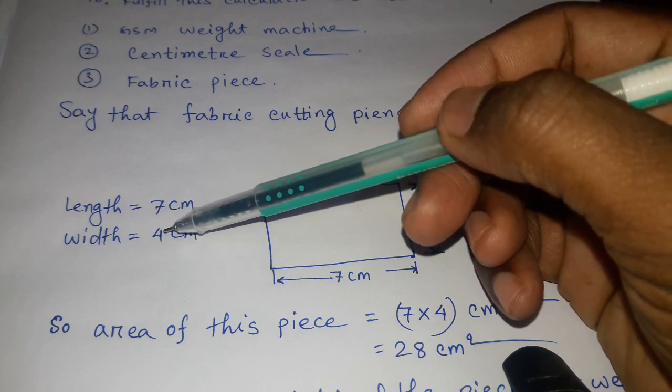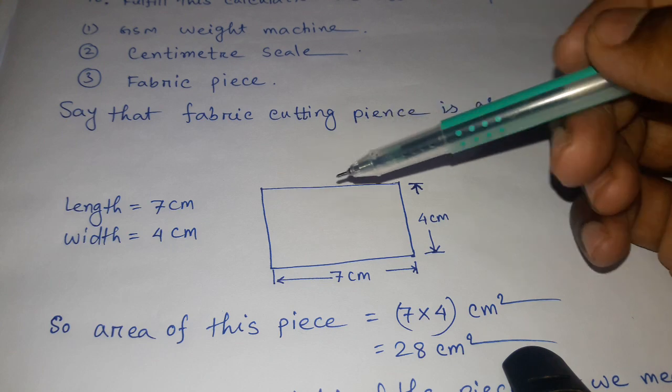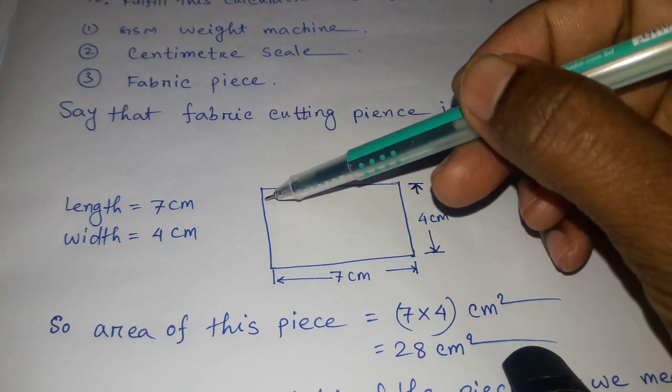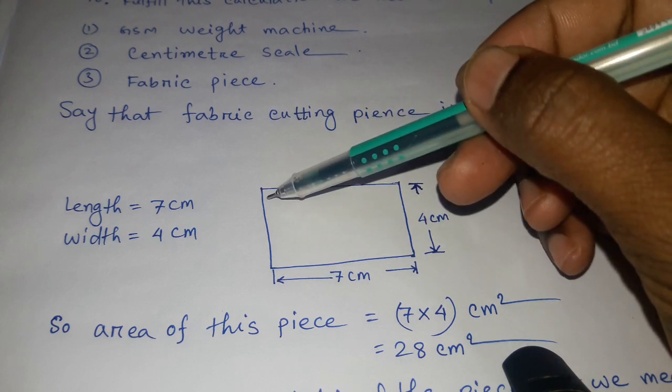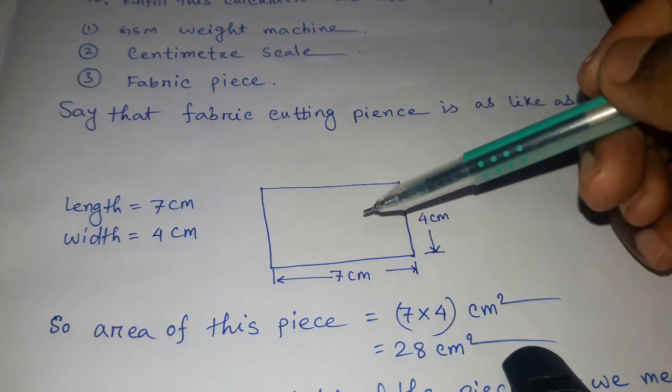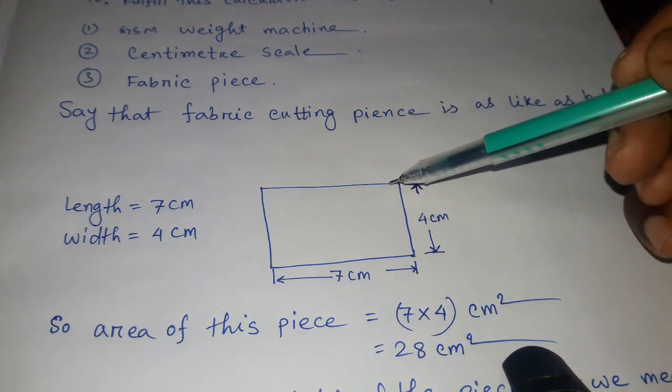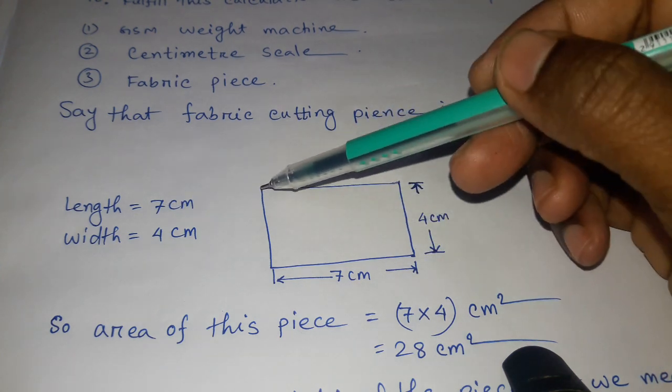The average value is 7 centimeters lengthwise and 4 centimeters widthwise, because we have measured the length three times, then divided by three to get the average value. Widthwise also, taking this side, this side, and the middle side, the average value is 4 centimeters.